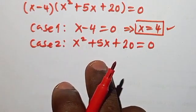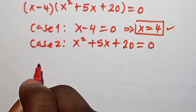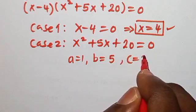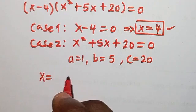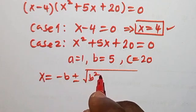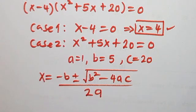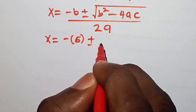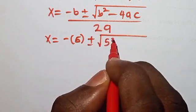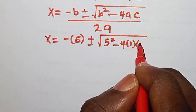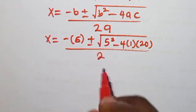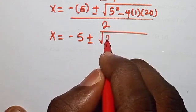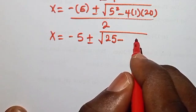For Case 2: x² + 5x + 20 = 0, we use the quadratic formula. Here a = 1, b = 5, c = 20. So x = [-b ± √(b² - 4ac)] / 2a = [-5 ± √(5² - 4·1·20)] / (2·1).